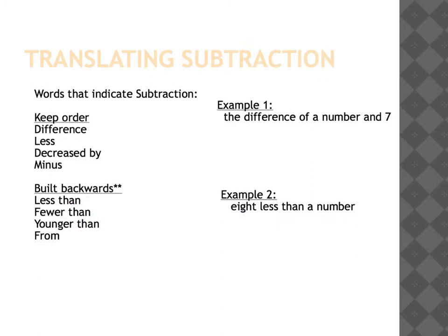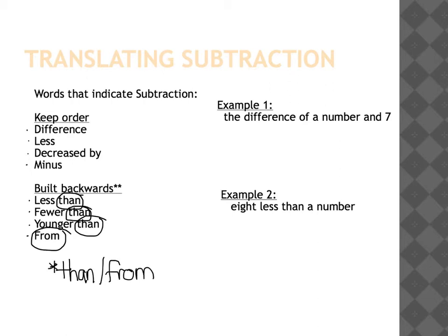So let's look at translating subtraction. Again, lots of words in the English language mean subtraction. Along the left-hand side you can see: difference, less, decreased by, minus, and then the ones that are built backwards — less than, fewer than, younger than, and from. Notice all these words have 'than' or 'from' in them. When you see 'than' or 'from,' you should always think these are backwards — the order of the English is going to change when you write the algebraic expression.